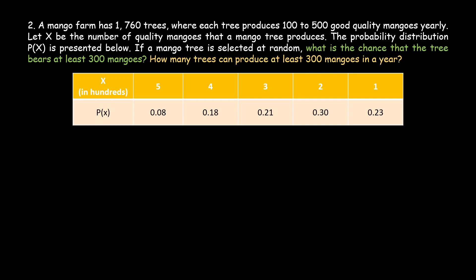A mango farm has 1,760 trees where each tree produces 100 to 500 good quality mangoes yearly. Let x be the number of quality mangoes that a mango tree produces. The probability distribution P of x is represented below. The x values are in hundreds, so 1 means 100, 2 means 200, up to 5 meaning 500. The probabilities are: P(5) = 0.08, P(4) = 0.18, and so on.